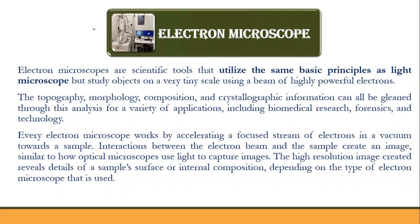Electron microscopes work on the same principle as a light microscope. The only difference is they are used to study objects on a very tiny scale, and they use highly powered electrons for that. Using them, we can find out the complete topography, morphology, composition, and crystallographic information of a compound.